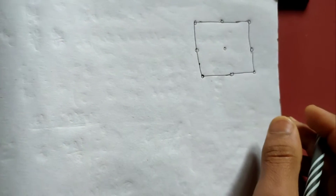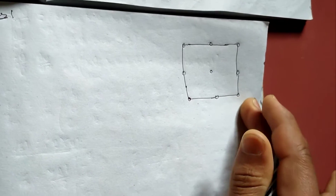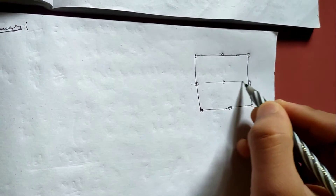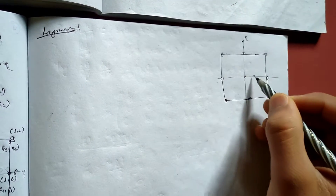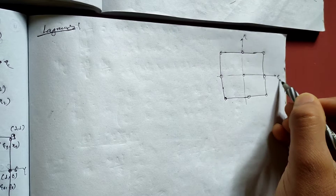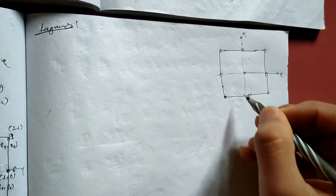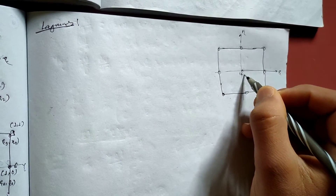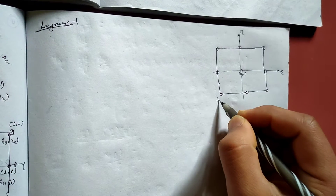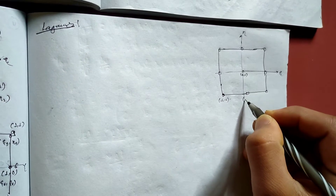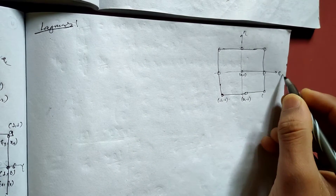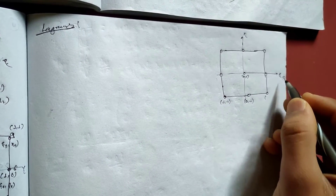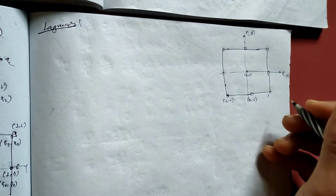Nine-noded rectangular element — this is the shape function. The x-axis is eta and this one is zeta, these two coordinates. Here we are going to have 0,0 and here minus 1, minus 1, and here x3, y3, minus 1.